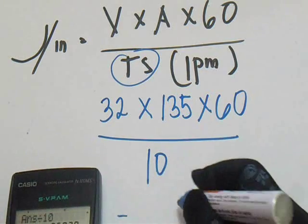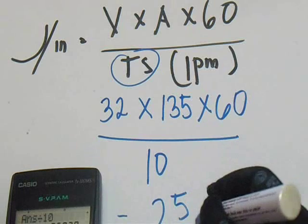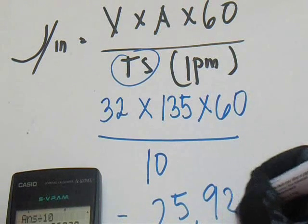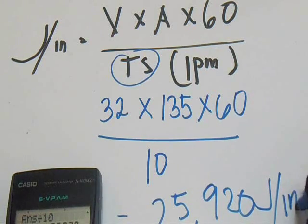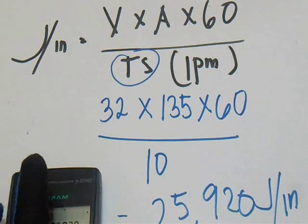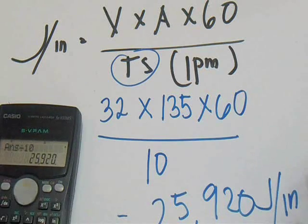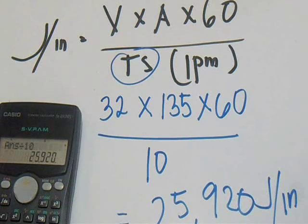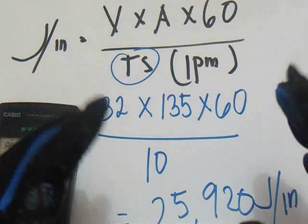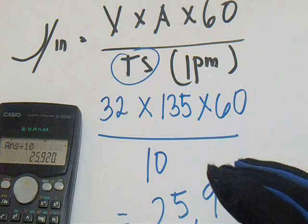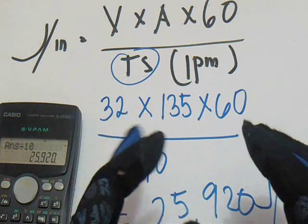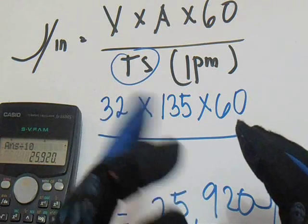Our answer is 25,920 joules per inch. Okay, this is our answer for this example for the long arc length. Now if you will compute it as a short arc length, we have a different Volt — let's change this.